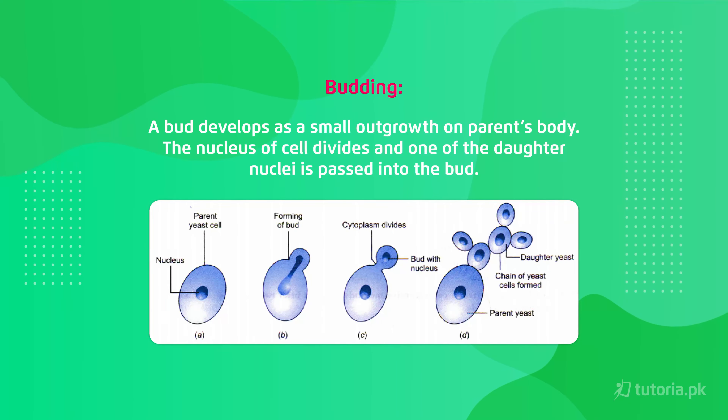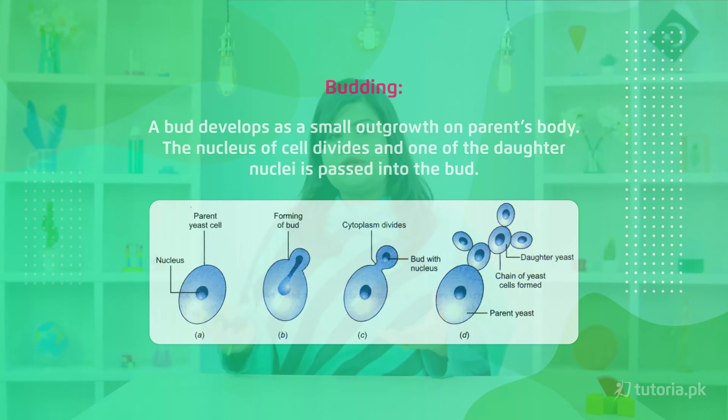In simple words, the parent body starts to develop a small outgrowth at some point on its body. That growth will later become a new organism — a totally different individual. The genetic material of that new organism comes from the nucleus of the parent.